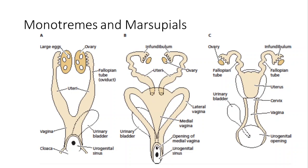In marsupials, notice this odd reproductive structure: there is a vaginal opening, but the vagina is bipartite — it splits into two, so there's a left and right vaginal canal, and there are two uteri. Two uteri are also seen in lots of other mammals: dogs, cats, rats, and mice all have two uteri. Primates tend to have just one uterus, but we have two fallopian tubes as any mammal would.